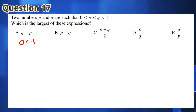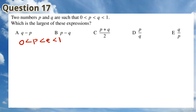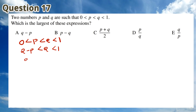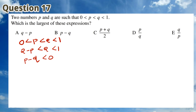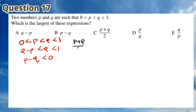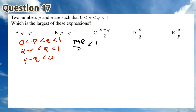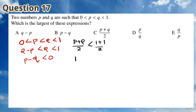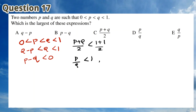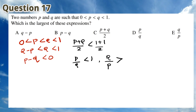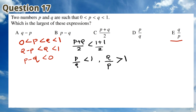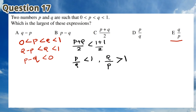For Question 17, we know that 0 is less than P, which is less than Q, which is less than 1. This means that Q minus P is less than Q, which is less than 1. And P minus Q is less than 0. And P plus Q divided by 2 is less than 1. This gives that P over Q is less than 1. And Q over P is greater than 1, so Q over P is the only one of the 5 expressions which is greater than 1, meaning it is the largest. This means that the answer is E.